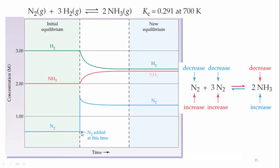So I have just changed the concentration of nitrogen — I disturbed the equilibrium by adding nitrogen gas. The concentration of N₂ increased from 0.5 to 1.5, meaning the reaction is no longer at equilibrium. The ratio of products to reactants now gives us Qc, not Kc.